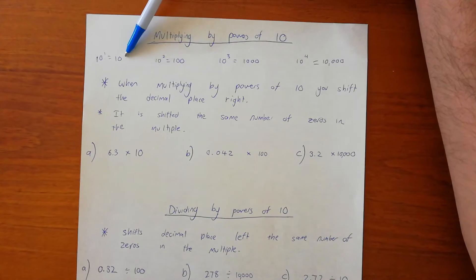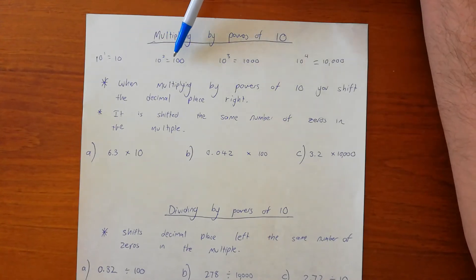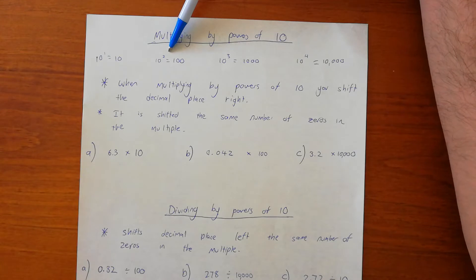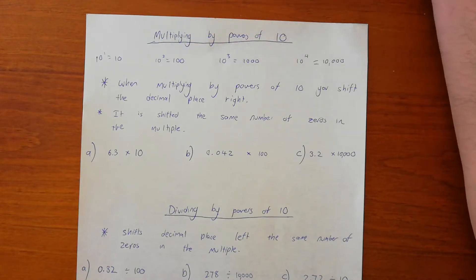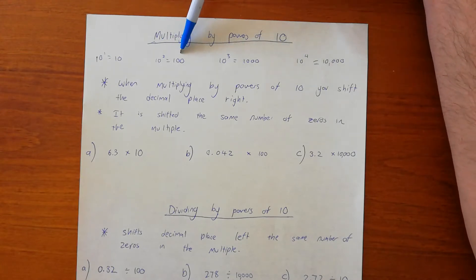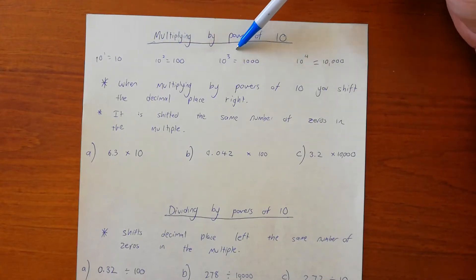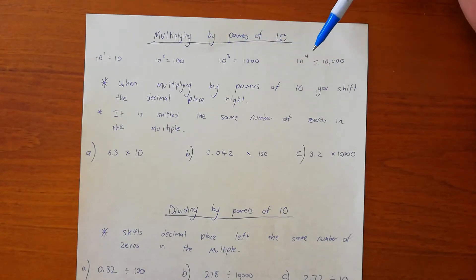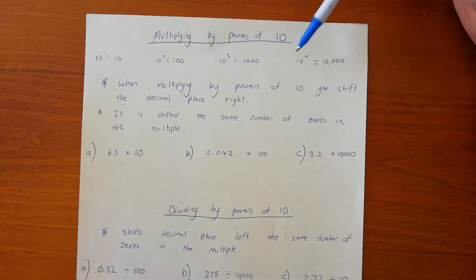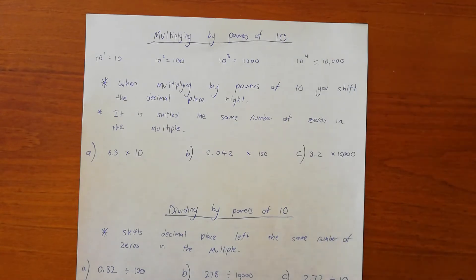If we have 10 to the power of 1, that's 10. 10 to the power of 2 means 10 times 10, or 10 times itself twice — that's 100. 10 to the power of 3, that's 10 times 10 times 10 — 1,000. 10 to the power of 4 is 10 times 10 times 10 times 10 — 10,000.